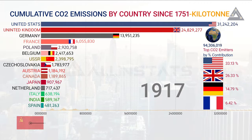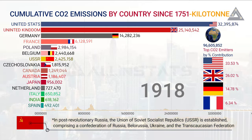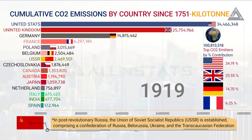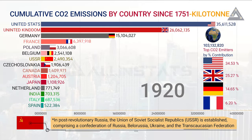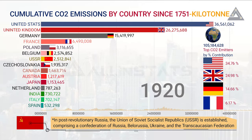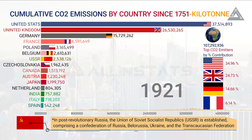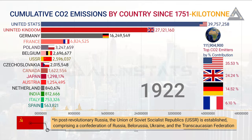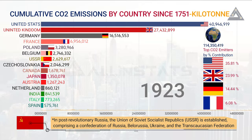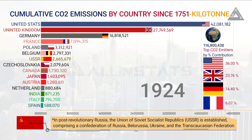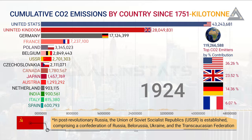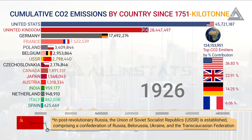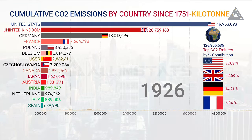In post-revolutionary Russia, the Union of Soviet Socialist Republics, USSR, was established. The USSR comprised a confederation of Russia, Ukraine, and the Transcaucasian Federation.